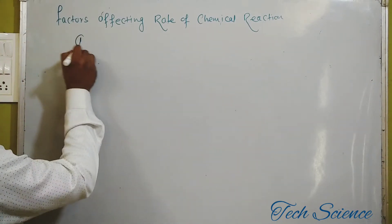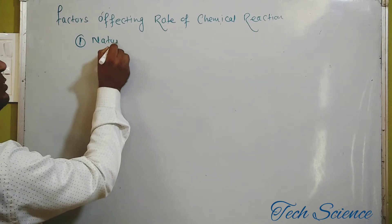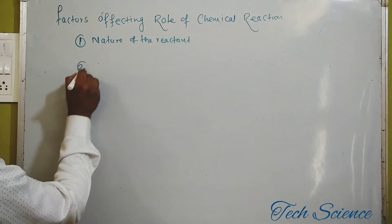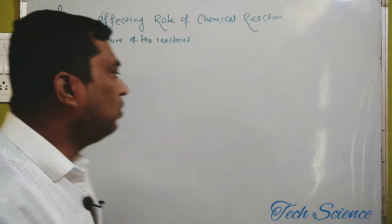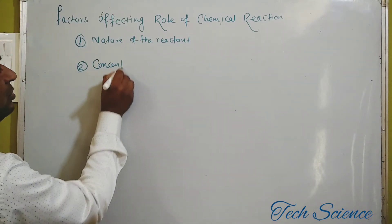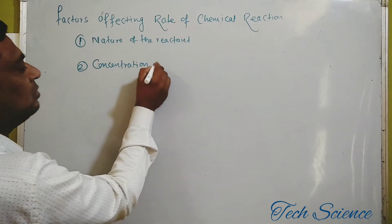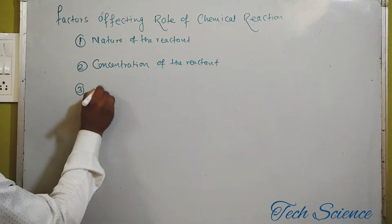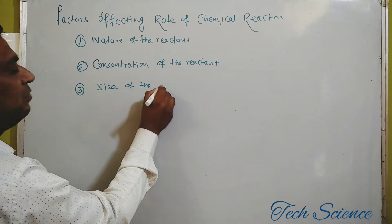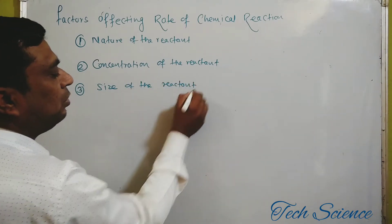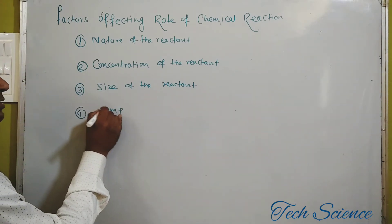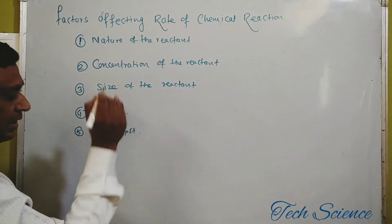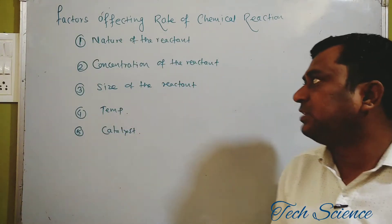So the five factors affecting the rate of chemical reaction are: first, nature of the reactant; second, concentration of the reactant; third, size of the reactant; fourth, temperature of the reaction; and fifth, catalyst. These are the five factors on the basis of which we can decide whether the reaction is slower or faster.